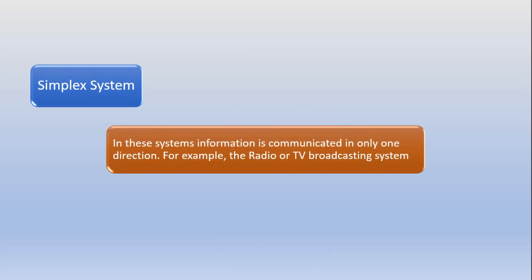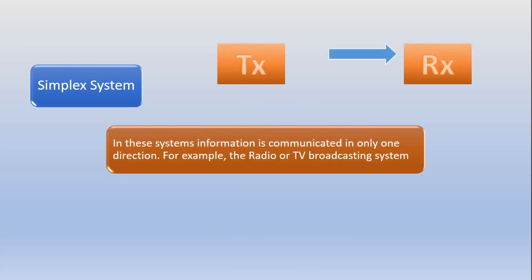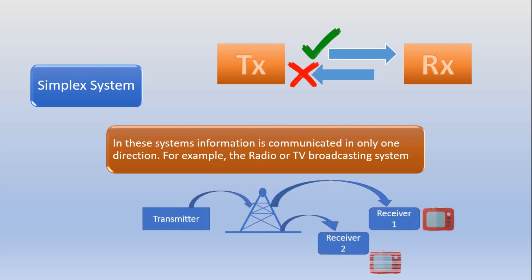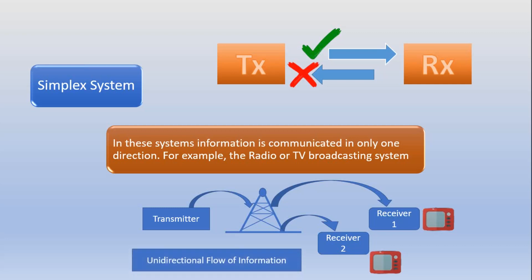Simplex is basically one-way communication. The transmitter sends information to the receiver and the receiver accepts the signal, but it is not possible for the receiver to send any information back to the transmitter. For example, a transmitter broadcasts through an antenna to multiple users like receiver 1 and receiver 2 — these receivers may be televisions or radios. Whatever we watch on television is a broadcast signal, and the television receives the signal but cannot transmit it back. This is the simplex communication system.